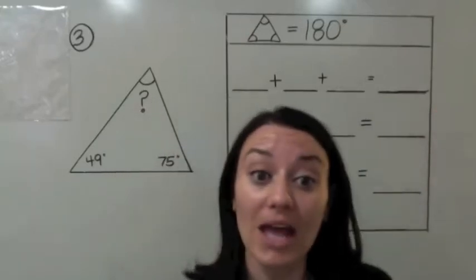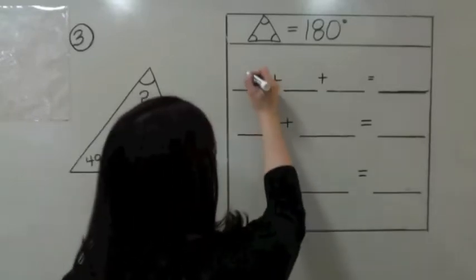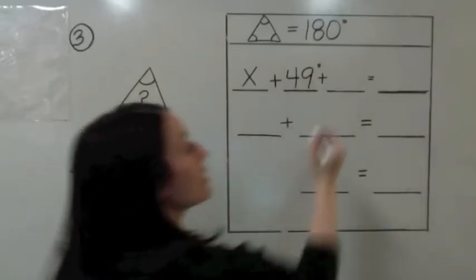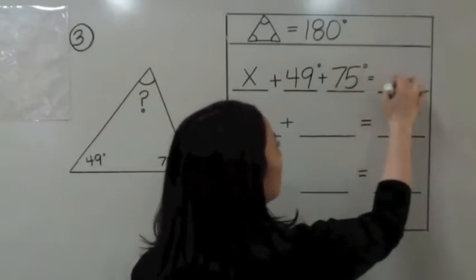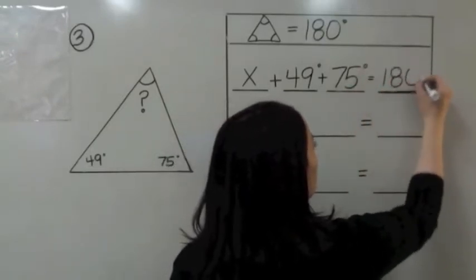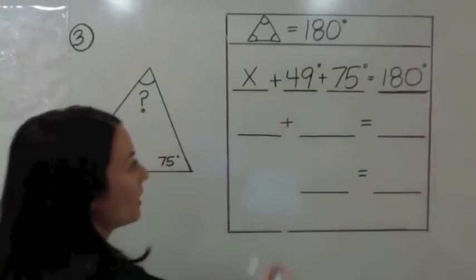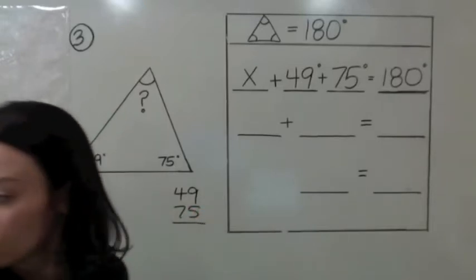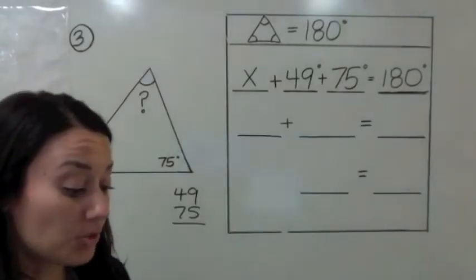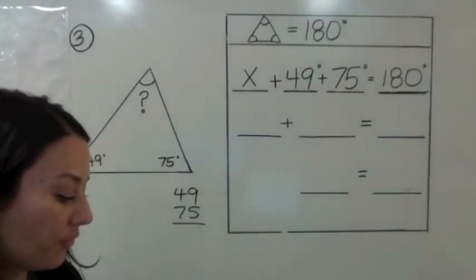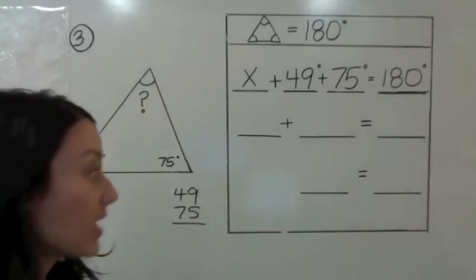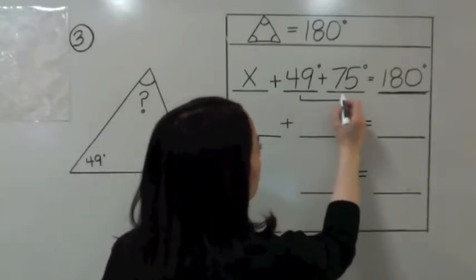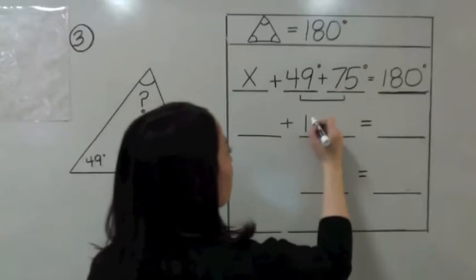For the unknown angle, we're going to call it X. We set up this equation: X plus 49 degrees plus 75 degrees equals 180 degrees. The first step is to add up 49 and 75. What is 49 plus 75? 49 plus 75 is 124 degrees.